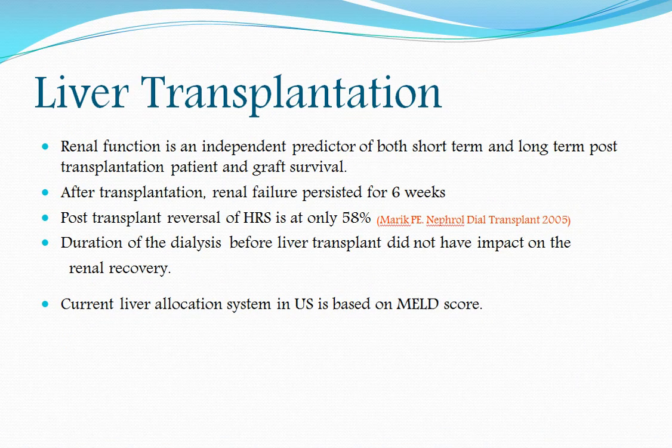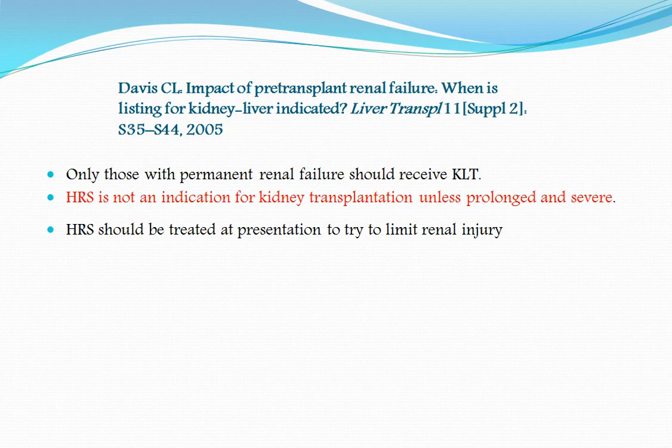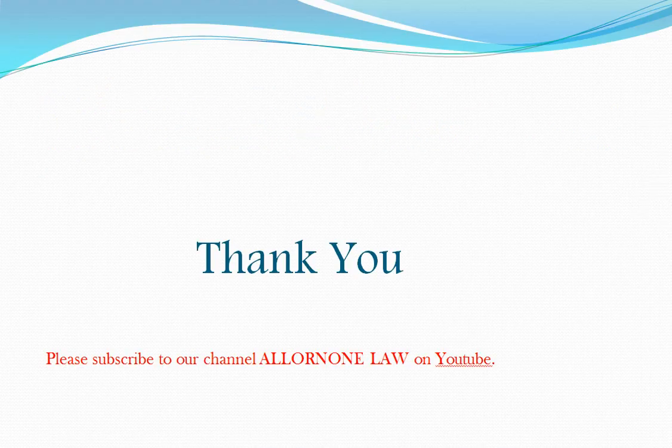Renal function is an independent predictor of both short-term and long-term post-transplantation survival and graft survival. After transplant, renal failure may persist for up to six weeks, and reversal of HRS occurs in only about 60% of cases. Duration of dialysis before liver transplant did not impact renal recovery. The current US allocation system is based on MELD score — below 20 indicates better survival; above 20 indicates poor survival. According to a 2005 study in Liver Transplantation, only those with permanent renal failure should receive combined kidney-liver transplantation. HRS alone is not an indication for kidney transplantation, but severe HRS should be treated at presentation to limit renal injury.